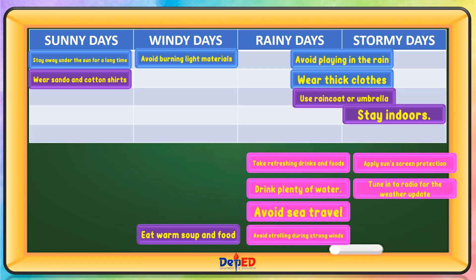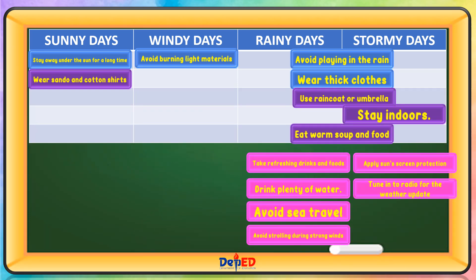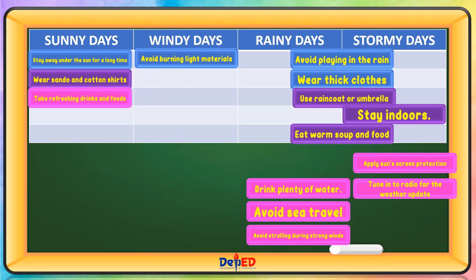Eat warm soup and food — this is for rainy days and stormy days. Take refreshing drinks and foods — this is for sunny days. Drink plenty of water — this is for sunny days.